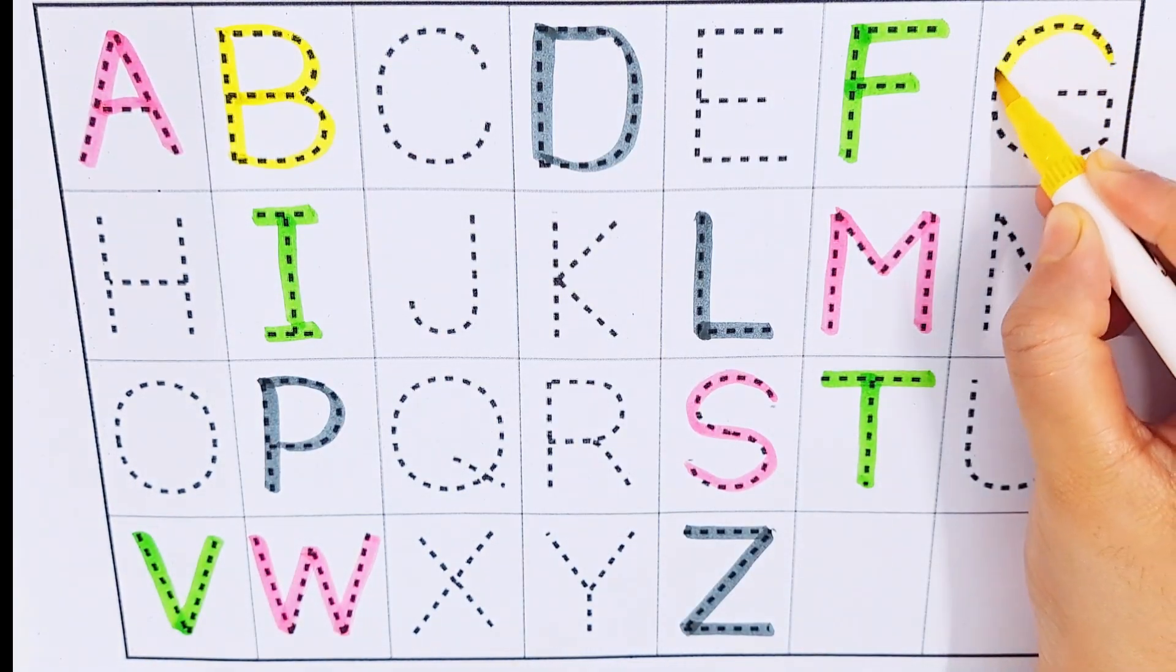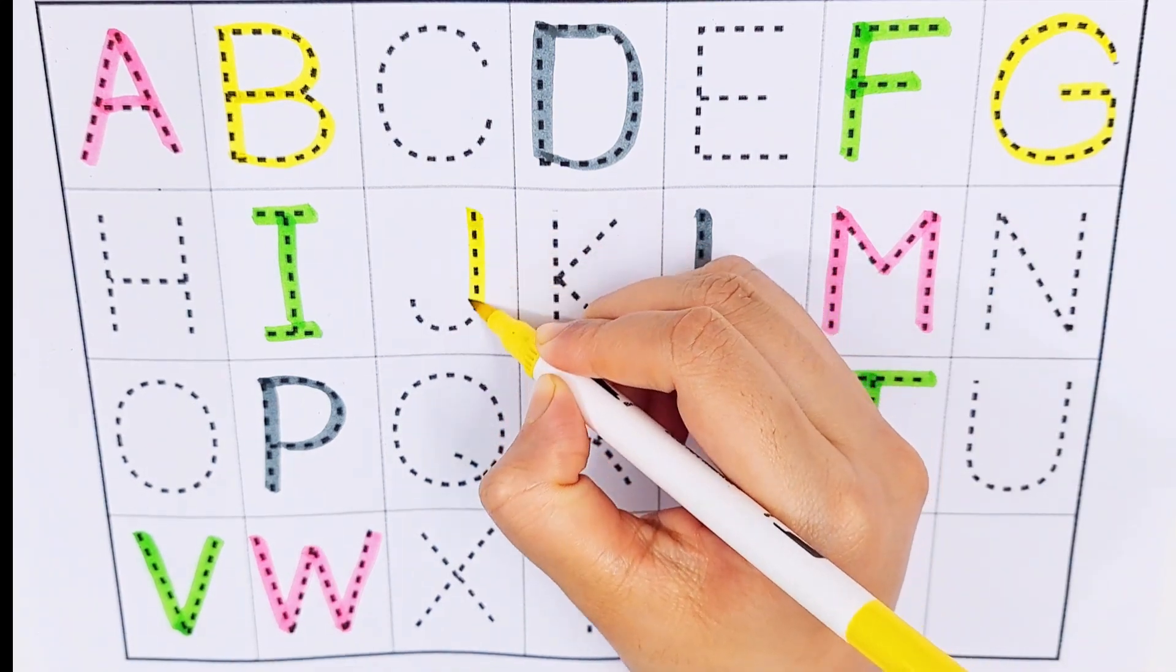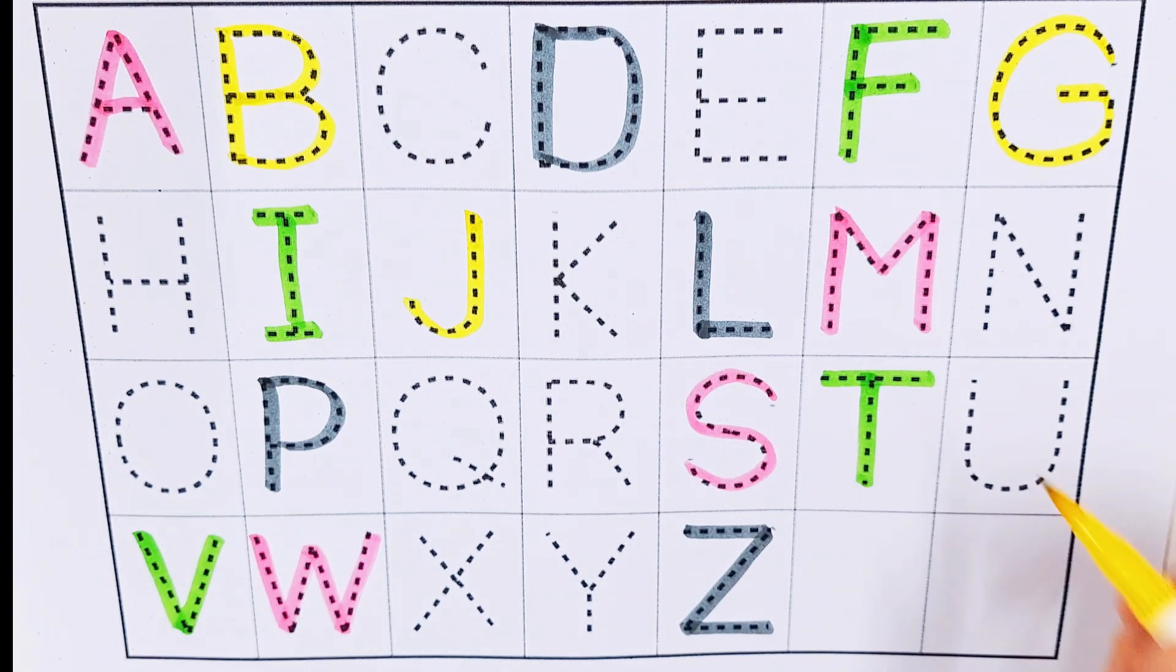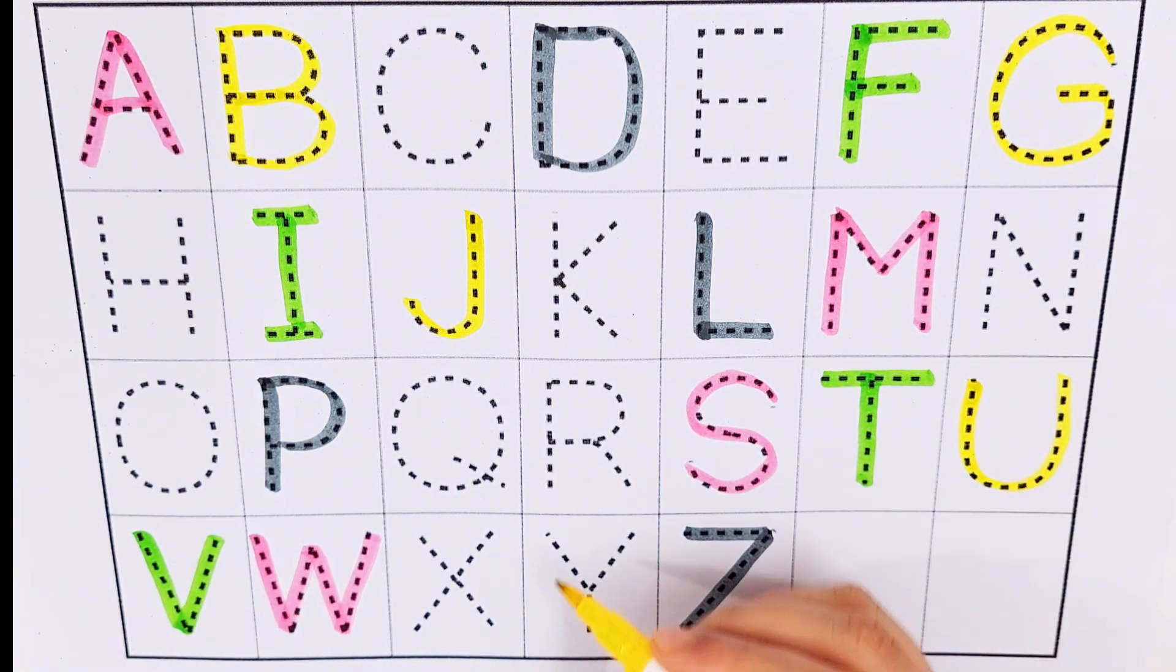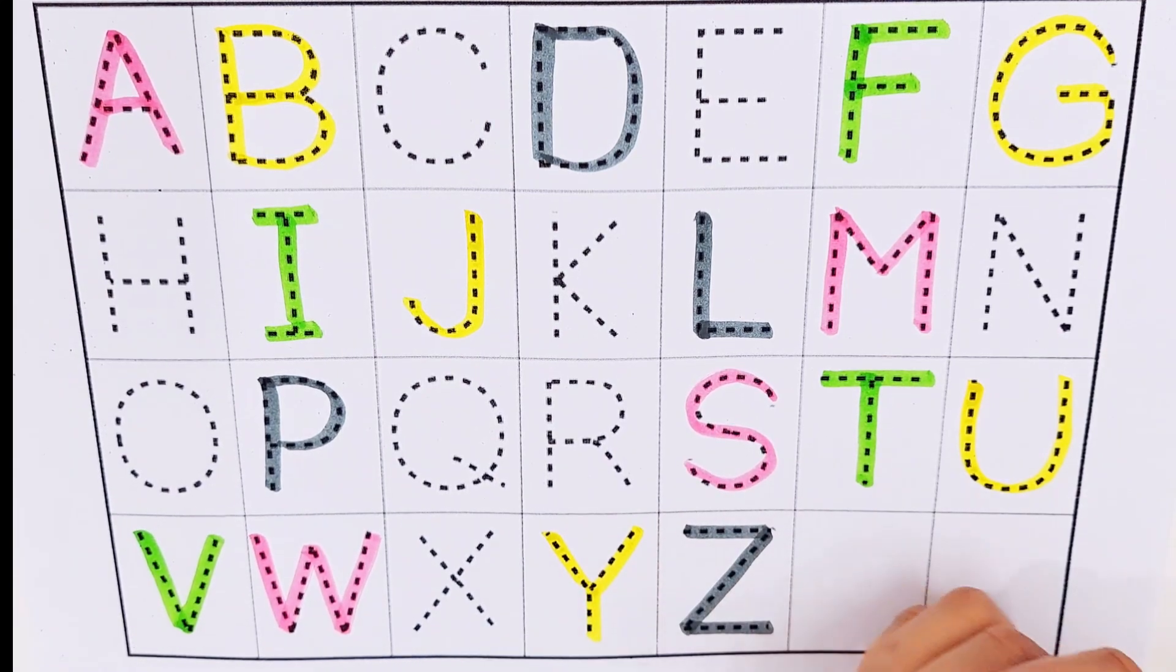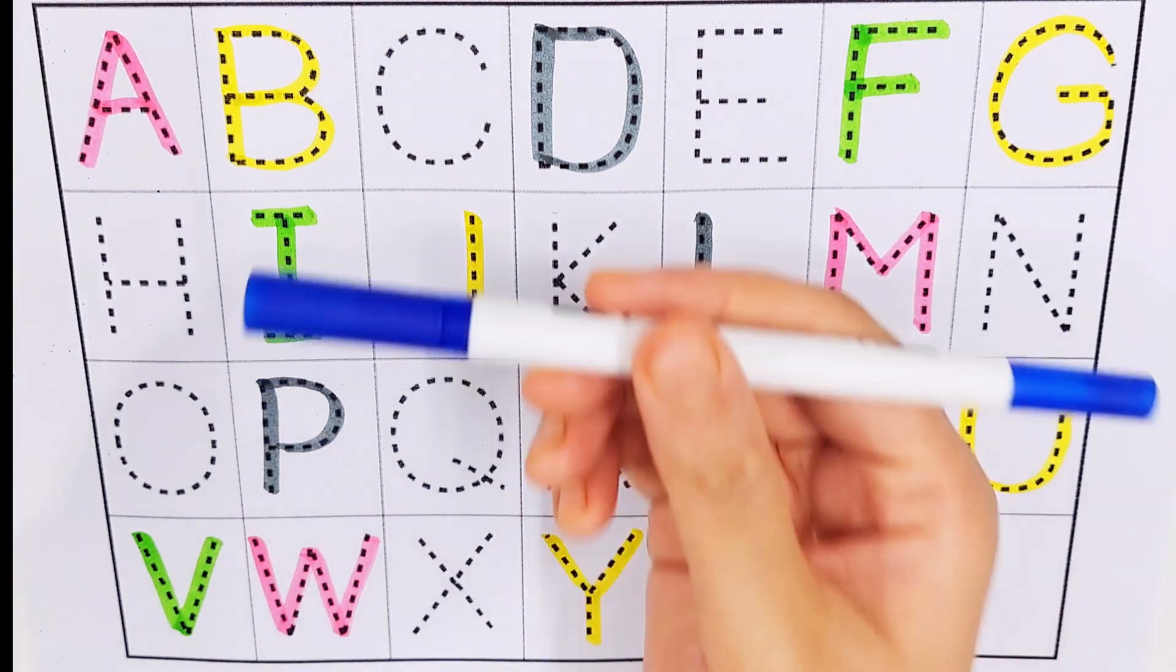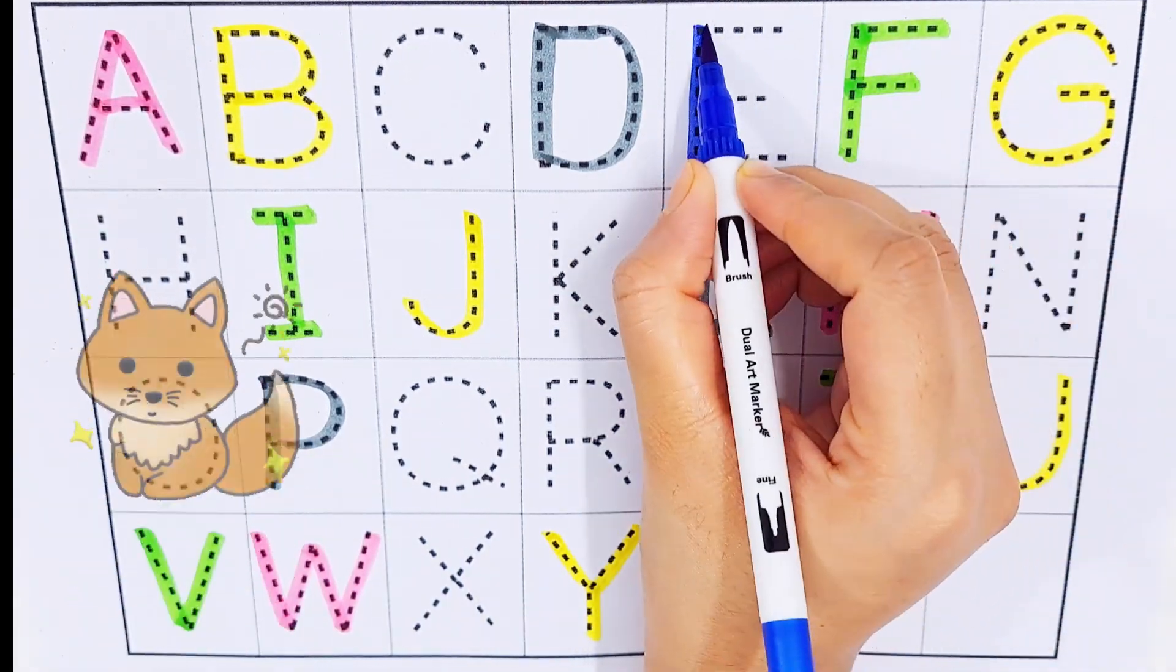G G for grapes, J J for juice, U U for uniform, Y Y for yum. Dark blue color. E E for energy.